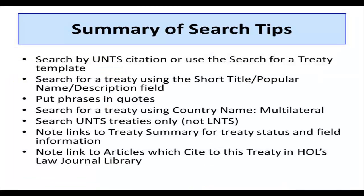Let's review what we have learned about searching for treaties in HeinOnline's United Nations Law Collection. Whenever possible, search the easiest way by UNTS citation. If you do not know the citation, use the Search for a Treaty template. When searching with this template, use the combination field: short title, popular name, description. Put phrases in quotes. Also use country name multilateral. Search UNTS treaties only, unless you are interested in historical treaties. Note the links to the treaty summary for information about treaty amendments as well as the fields for treaty searching, and note also the link to articles which cite the treaty. This concludes this brief introduction to treaty searching in HeinOnline's United Nations Law Collection. I hope you will try using this valuable resource for your treaty research. Happy researching!